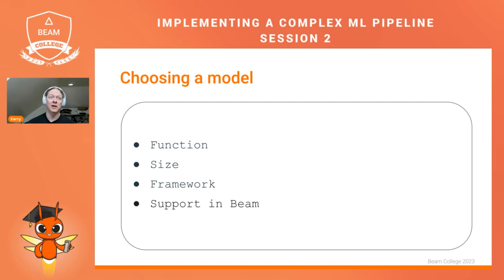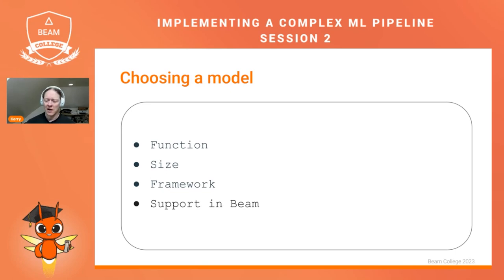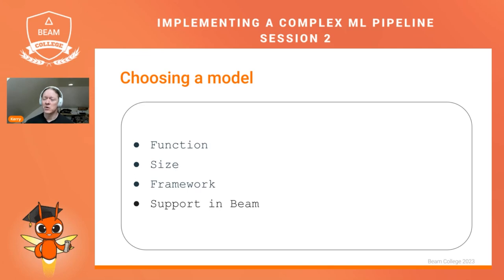You can also write a custom model handler if the pre-written model handlers don't serve your needs. Because we have that custom model handler option, we can literally support any kind of machine learning inference. A caveat is that Beam does not support model training well. Beam is a tool for inference across your dataset or preparing features you will use to train a model, but it's not good at training a model, mostly because in Beam you're defining a directed acyclic graph, and training an ML model is essentially a cyclic process.